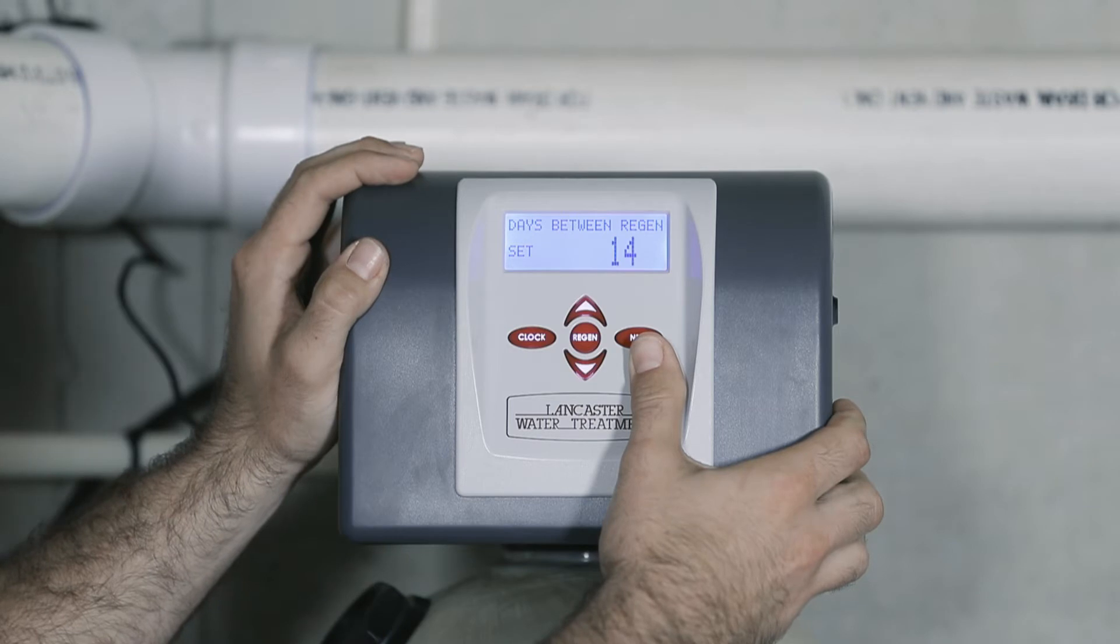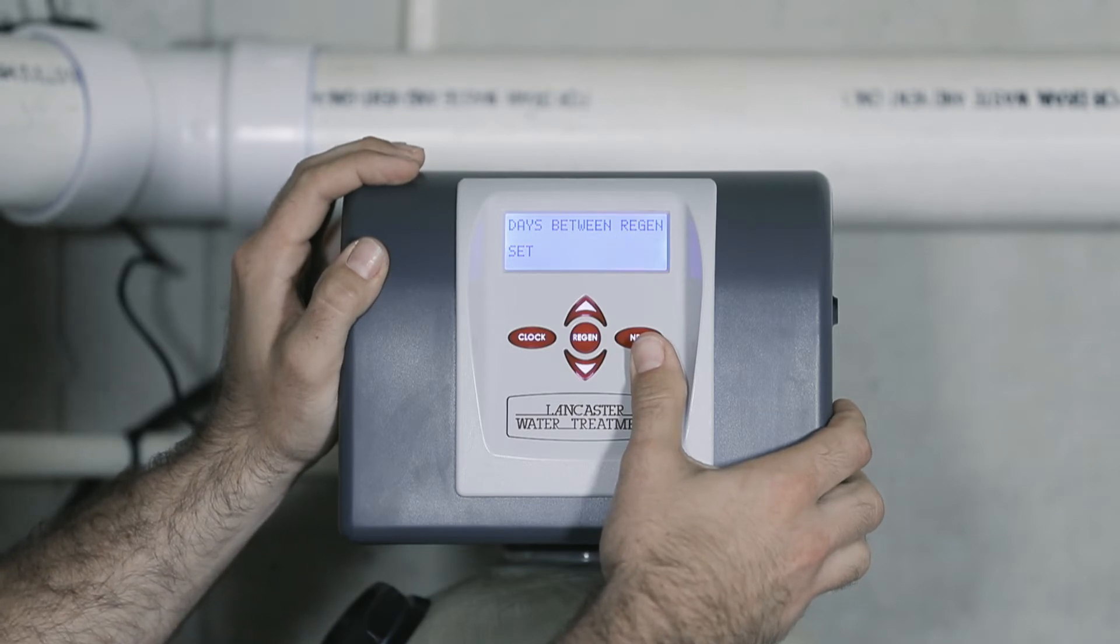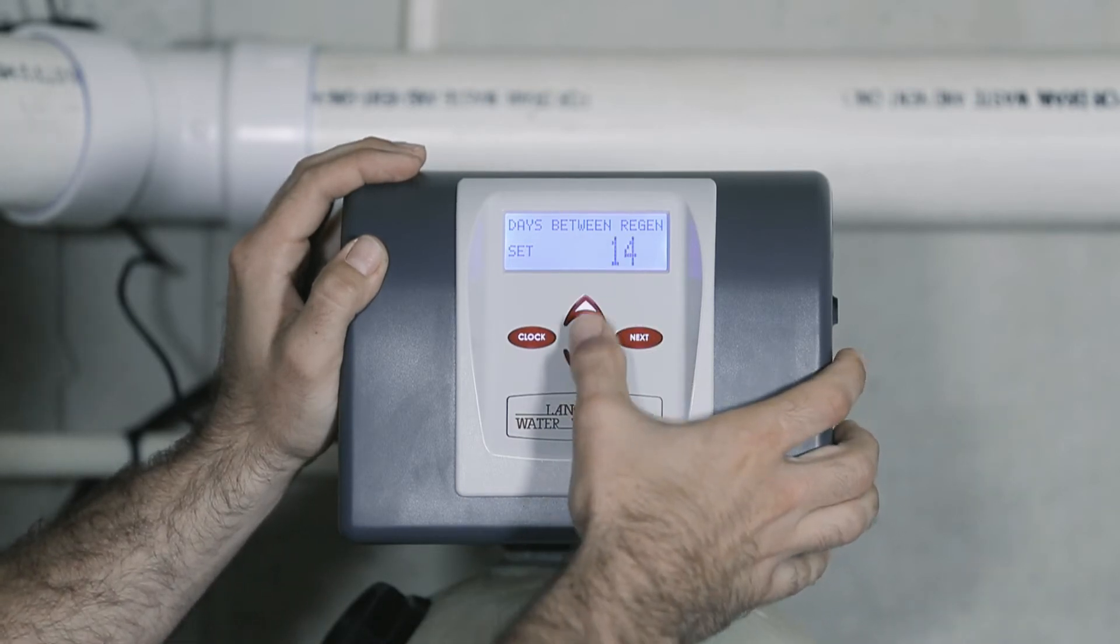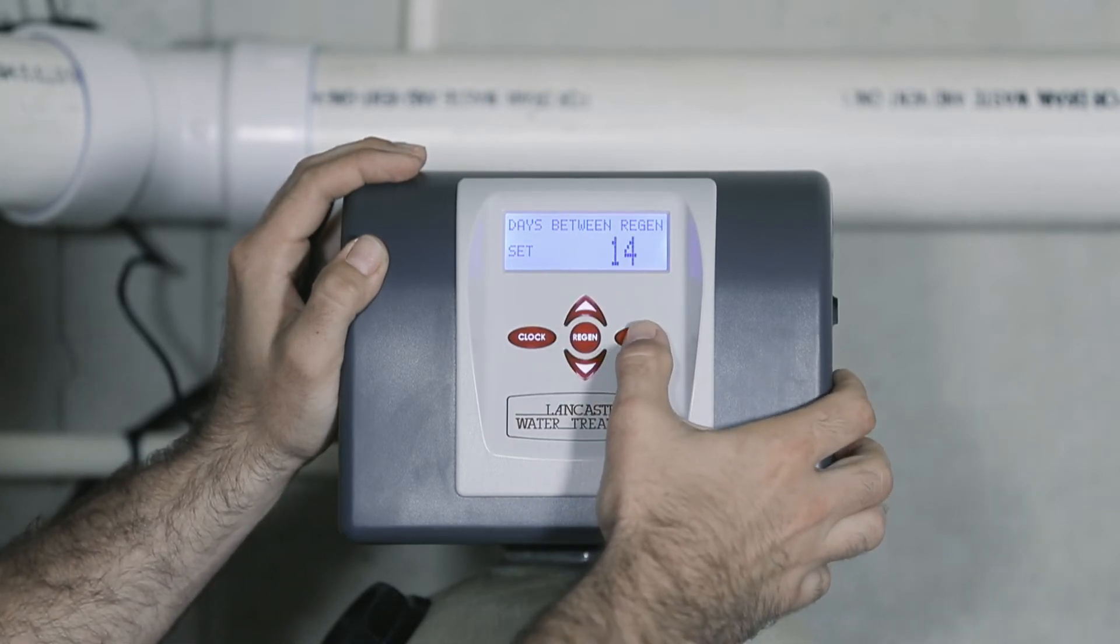This then changes to the screen for the days between or days override setting. It is currently set from the factory at 14. You can change that using the up and down arrows. Press next to complete.